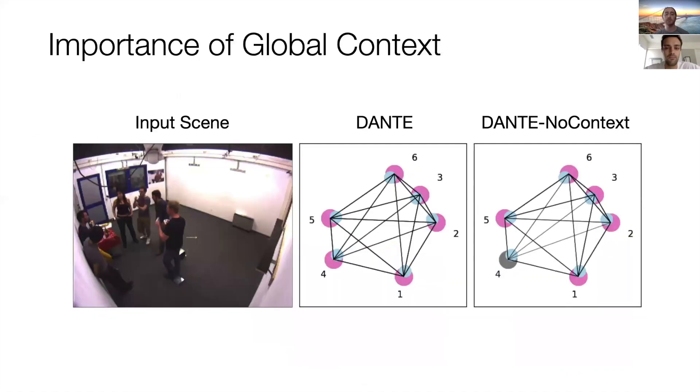Qualitatively, we can see the importance of the context features via an ablation study where we remove the context transform. Here, the predicted group membership is shown by color, and the predicted affinities are shown by line weight. For the scene shown, everyone should be in one large group. However, Dante without context produces lower affinities between person four and the rest of the group because of his distance from them.